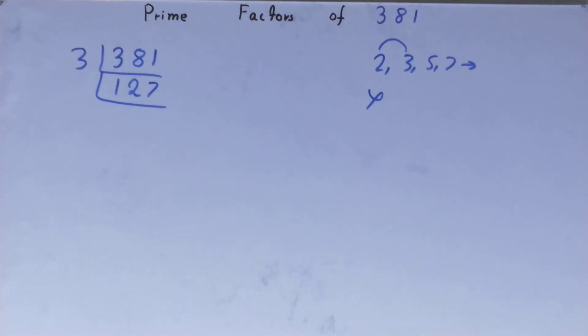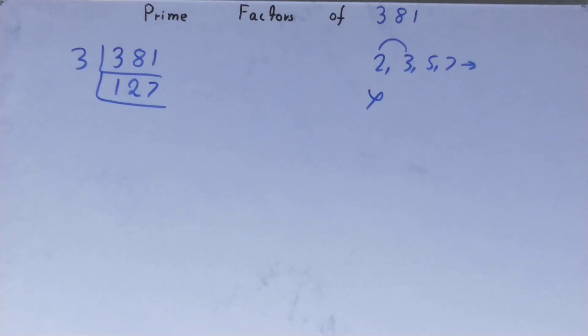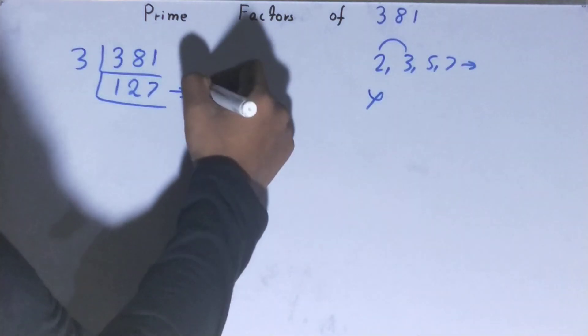Is this 127 further divisible by 3? If you check it, 3 times 4 is 12, 3 times 2 is 6, 1 left. No, it is not divisible by 3, and also not by any other prime number because 127 is itself prime.